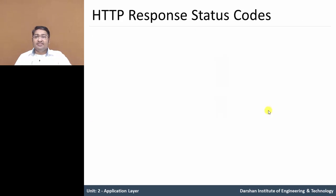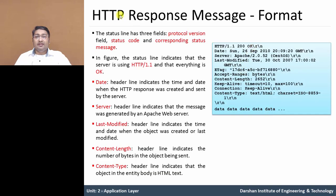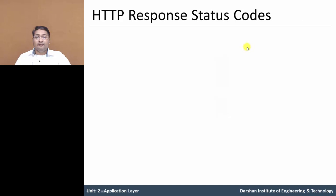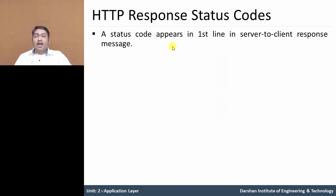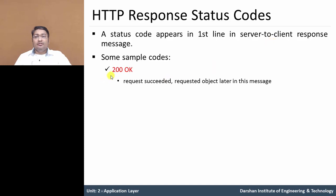Now, in detail about the HTTP response status codes: a status code appears in the first line of the server-to-client response message. For example, 200 OK means the request is successful and the requested object is present in this message — it is completely okay.